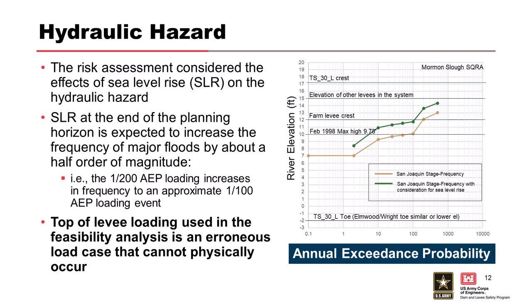To get a top-of-levee load on TS-30L, you would have already overtopped the entire system by two feet — the levied area is already flooded. So it's an erroneous load case to start with. From a risk-based approach, that load case can't even occur. The sea level rise component is important too: the San Joaquin River ties into the Pacific Ocean not far from TS-30L, and the area has about four feet of tidal influence daily.